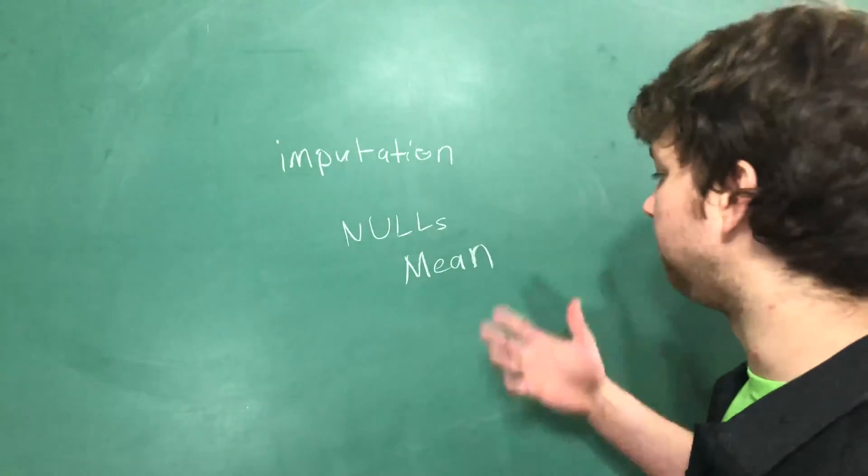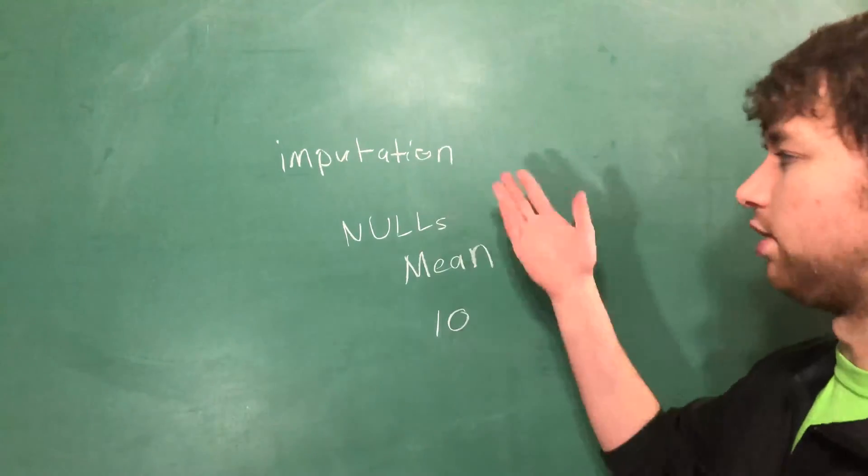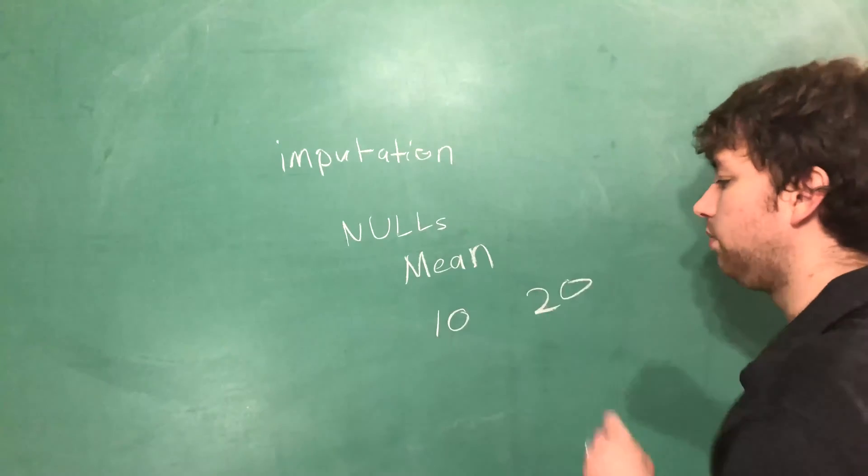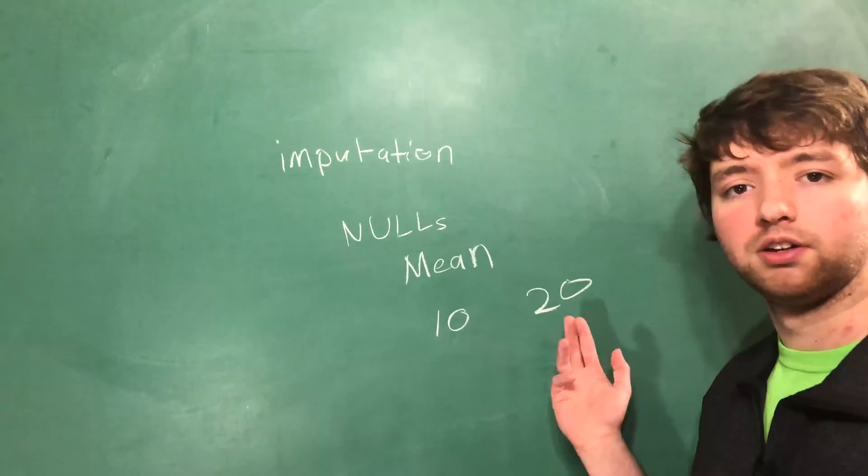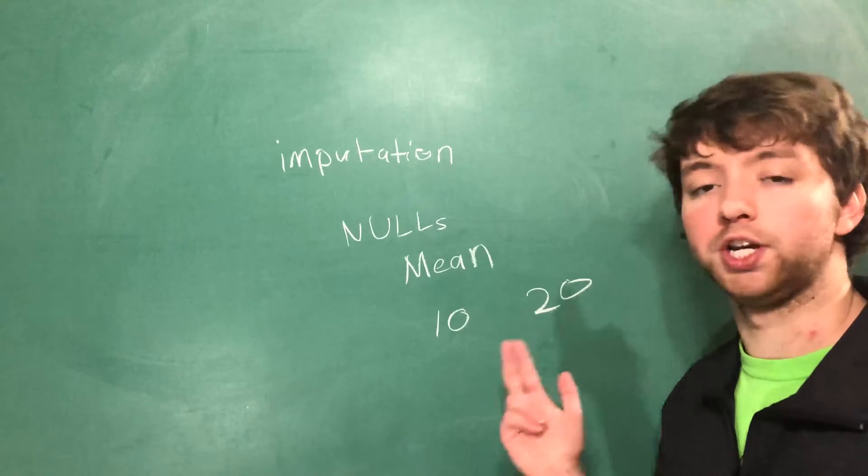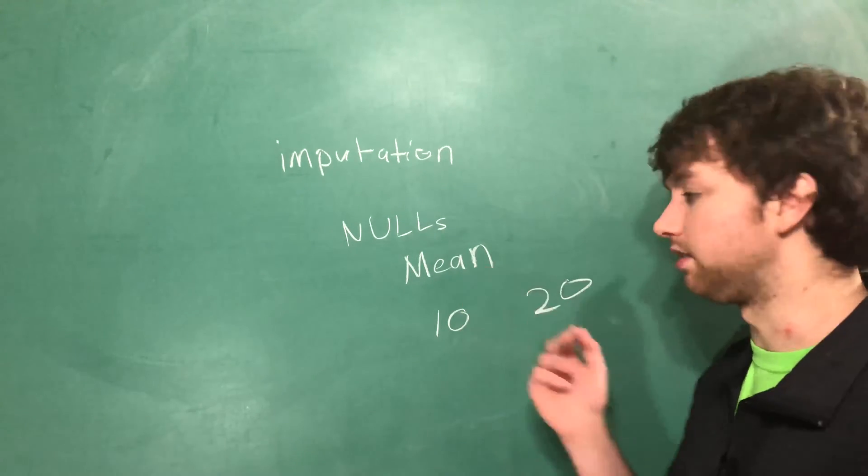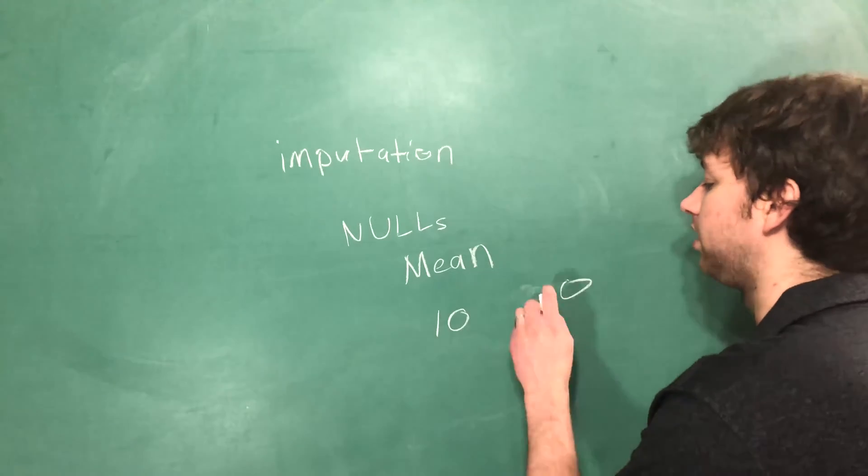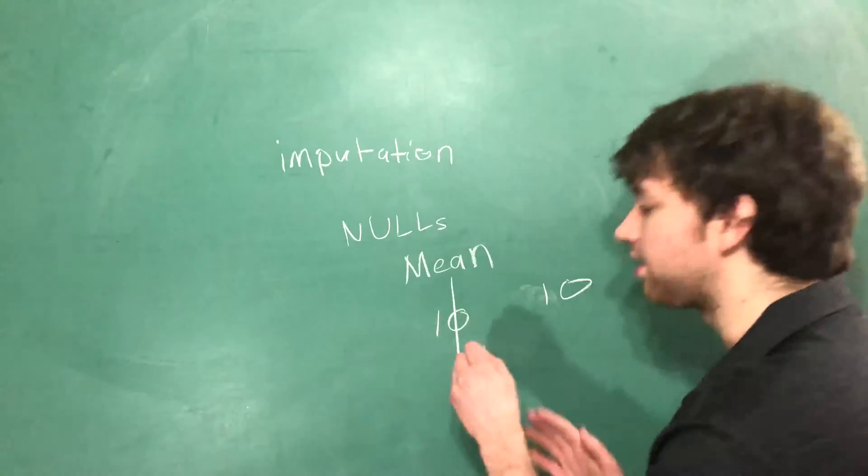For example, if the mean was like 10 and we made all nulls 20, well that's going to pull the mean closer to 20. So we want to make sure we're not skewing our data, so we do something such as using the mean. So rather than replacing nulls with 20, we replace them with 10. And what that does is it keeps everything centered at 10.